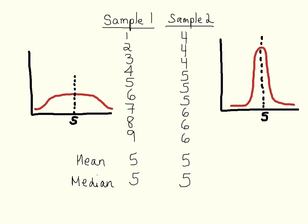This shows what the distributions might look like for each of these samples. In each case, the mean and the median are five, which is the value at the center of the distribution. But in one, the spread is much wider around the central tendency, meaning the variation is higher. So you can look at the distributions and based on their shape get a sense of the variation in the sample. Now we're going to talk about different measures of this variation.